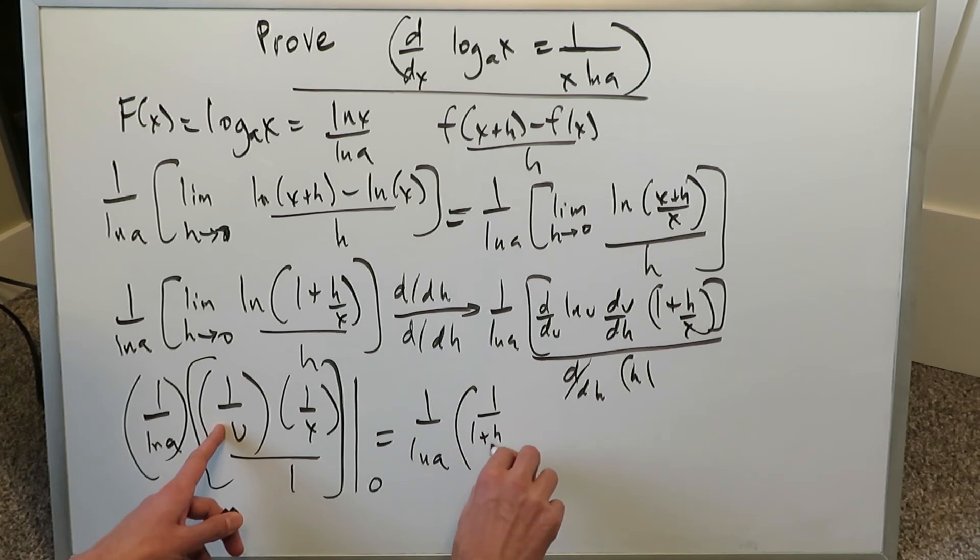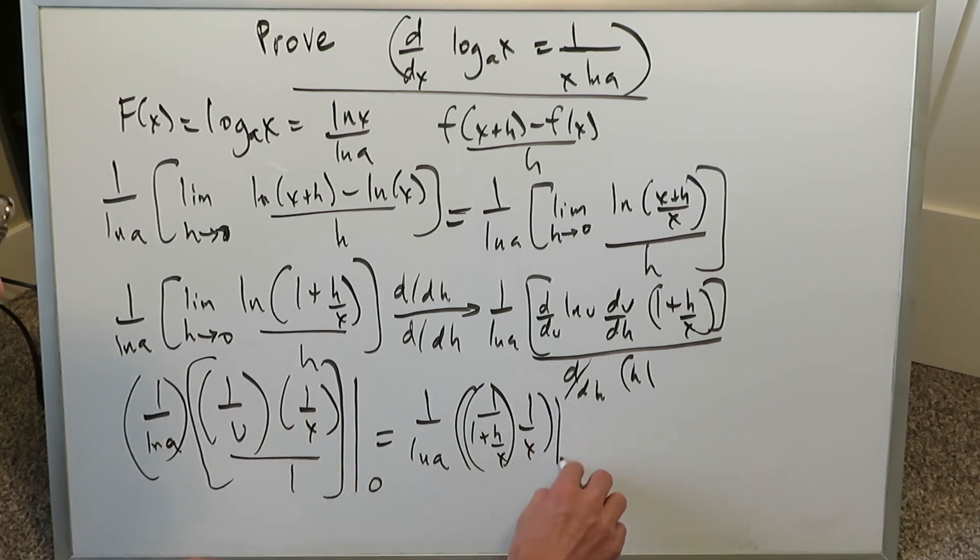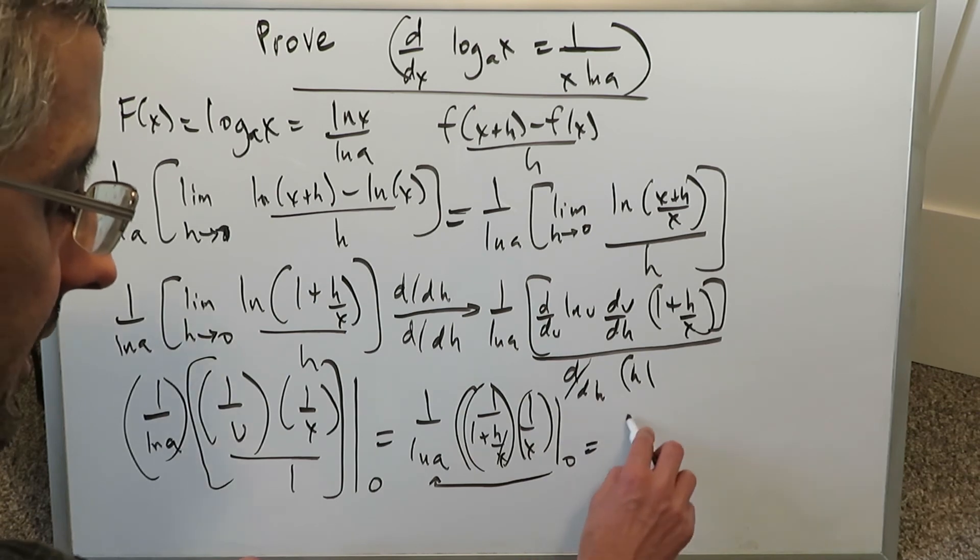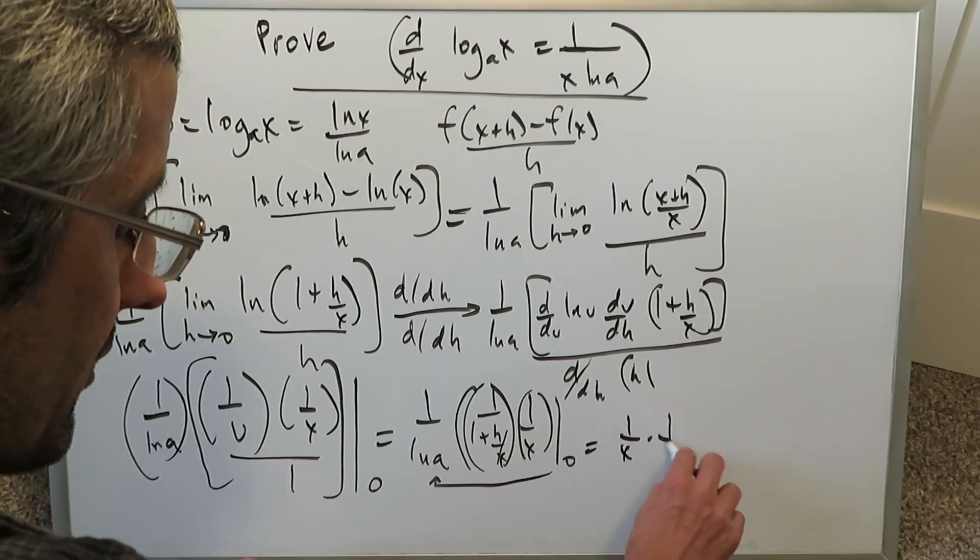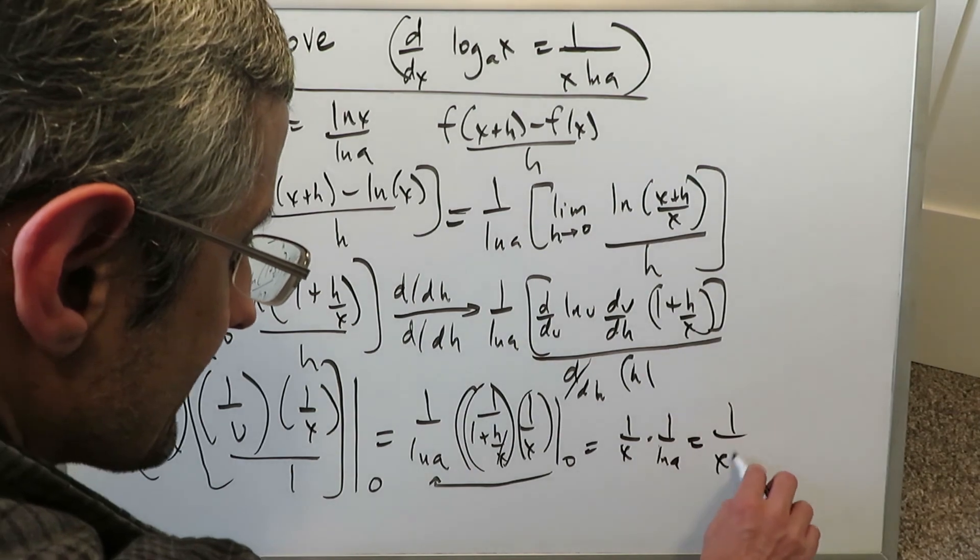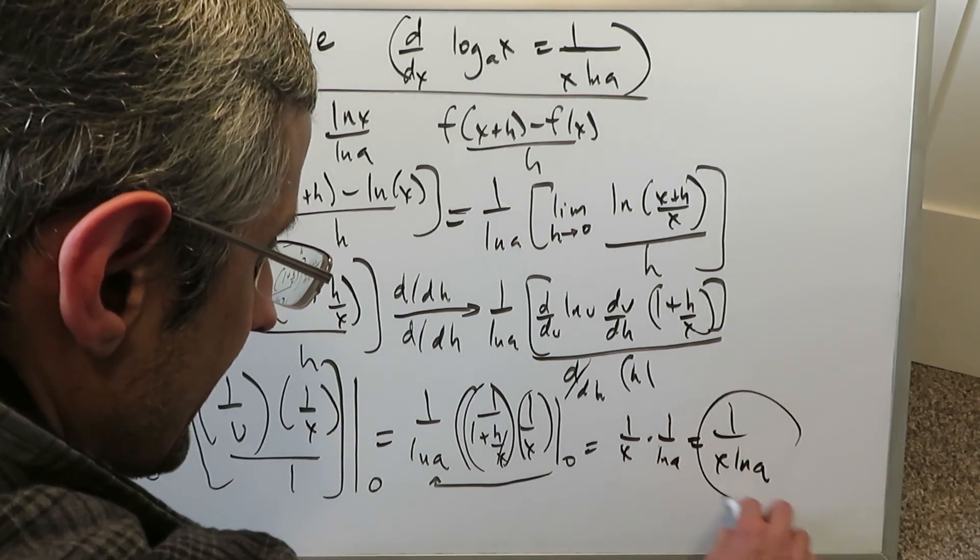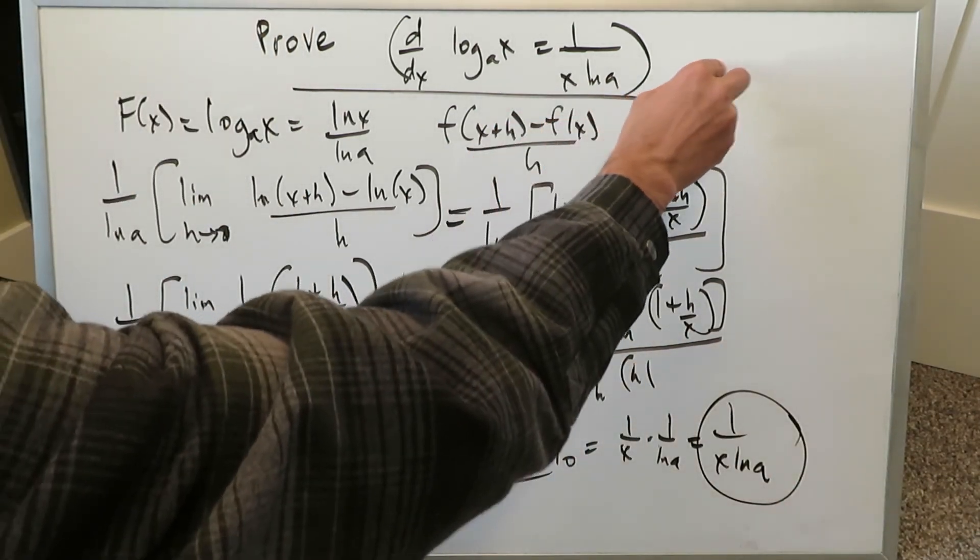This right here is my 1 over u factor coming right over here times 1 over x. This over 1 is meaningless. You can put 0 in here. If you put 0 here in place of h, you'll get 1 over 1 plus 0 because 0 over x is 0. This will 0 out. You'll have 1 over 1, which is just a 1. You'll be left with nothing but this 1 over x, which will happily move right outside and attach to that. You'll get 1 over x times 1 over ln A, and you get 1 over x ln A, which is exactly what we wanted right over here, and you see it.